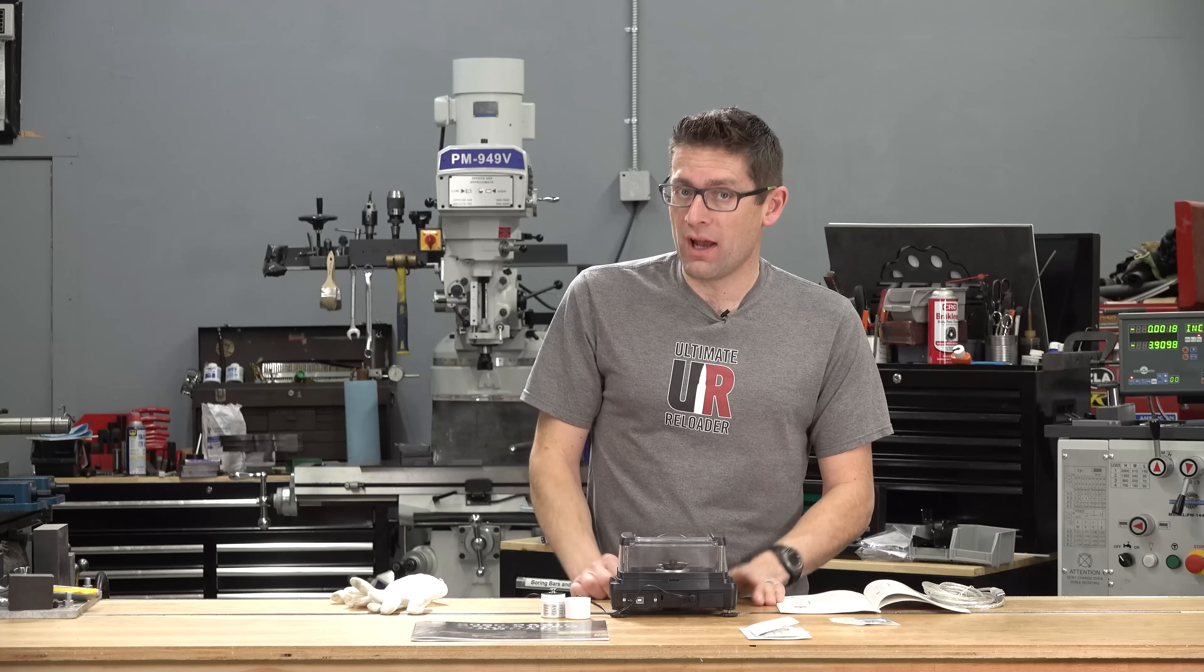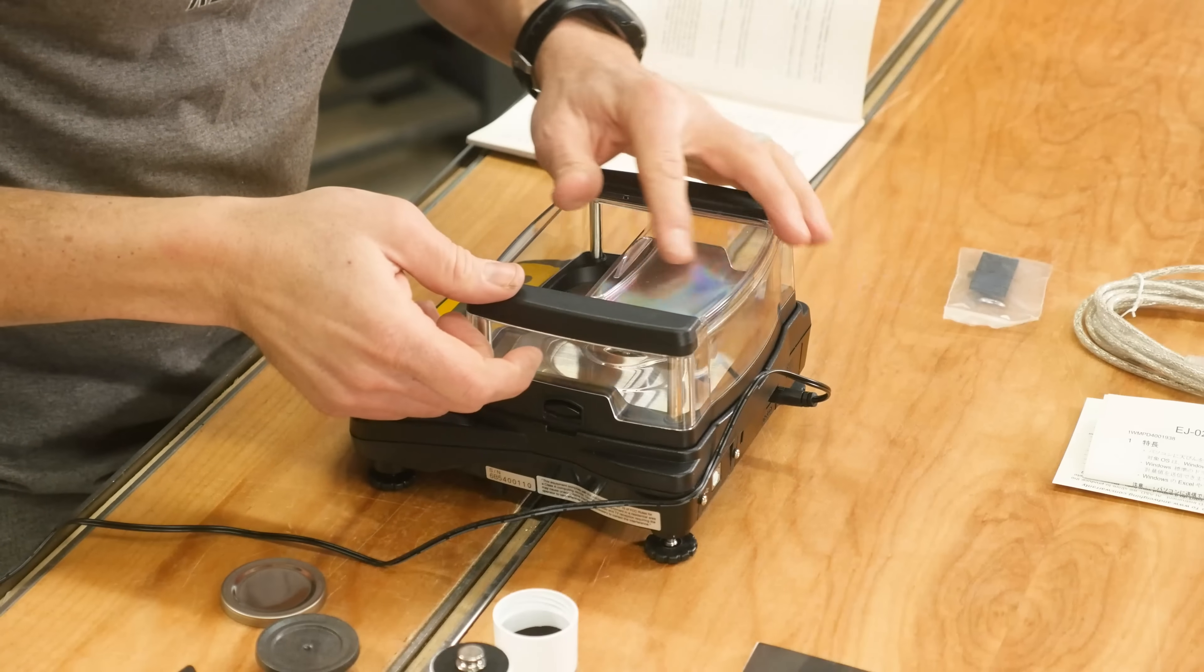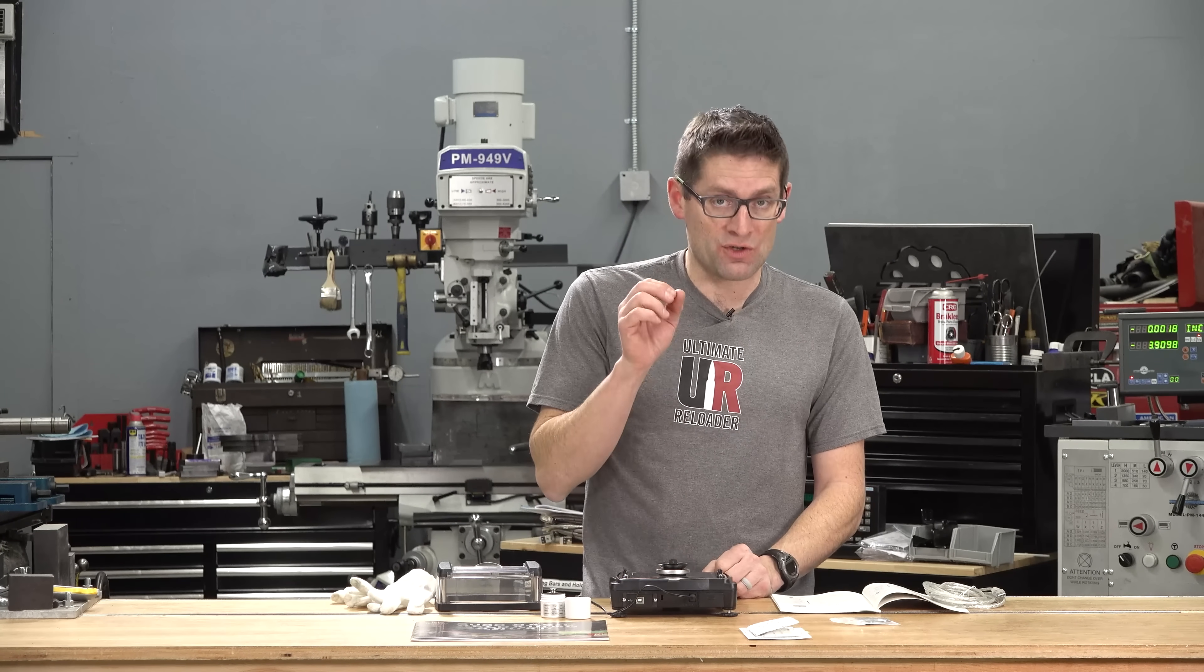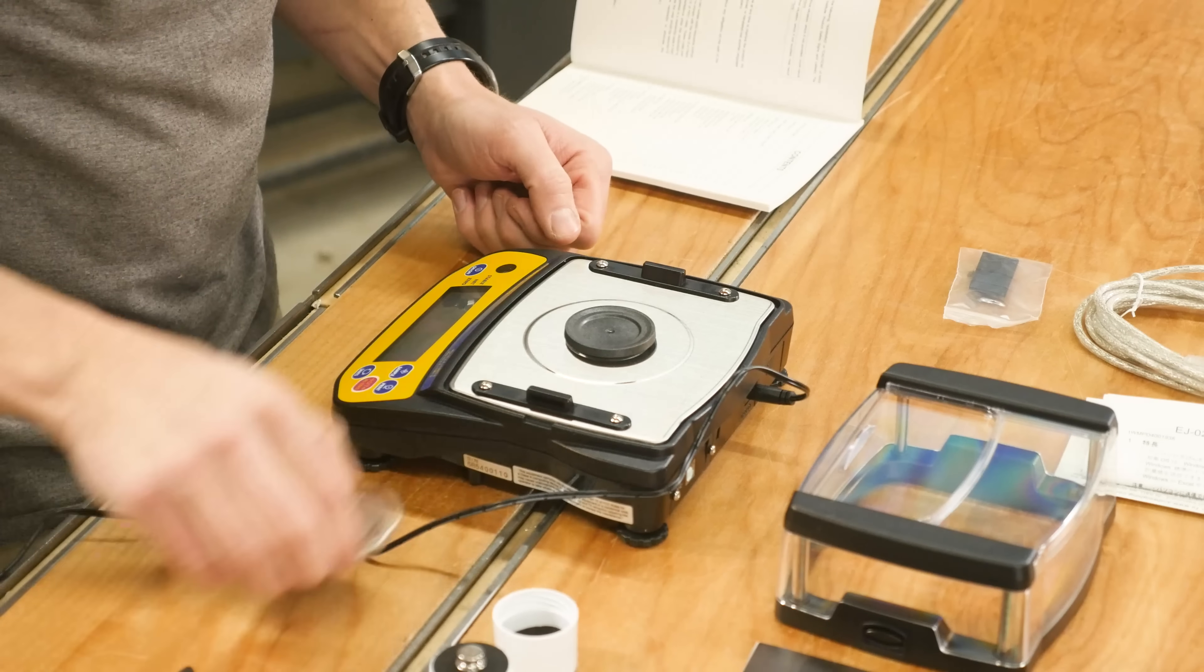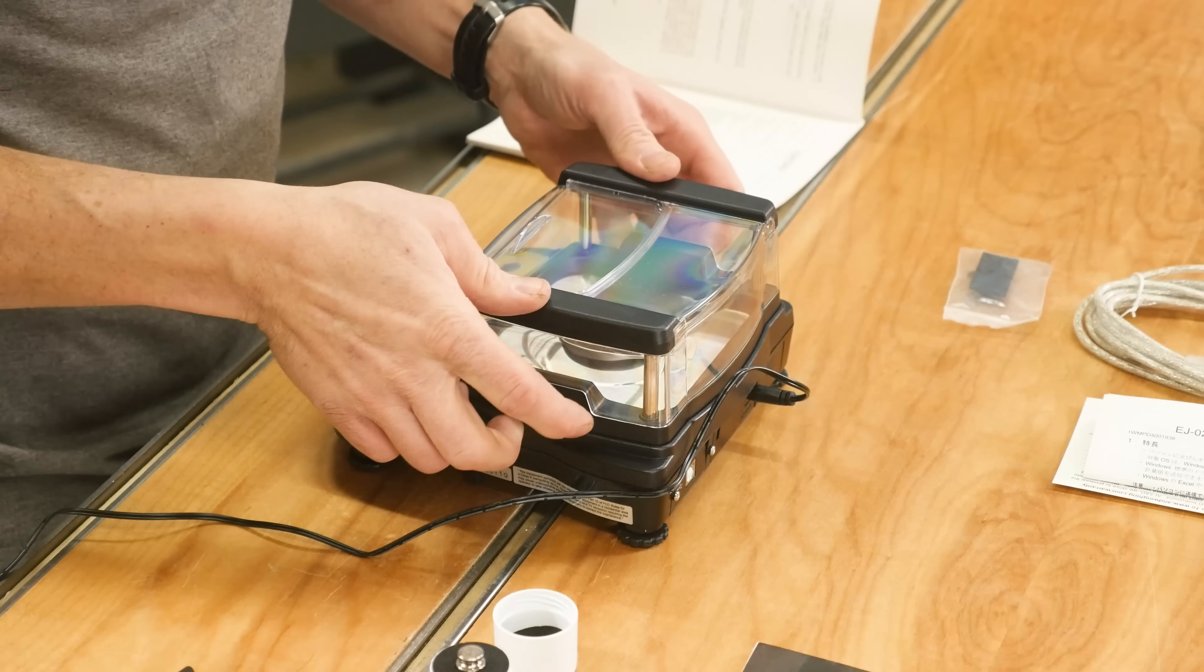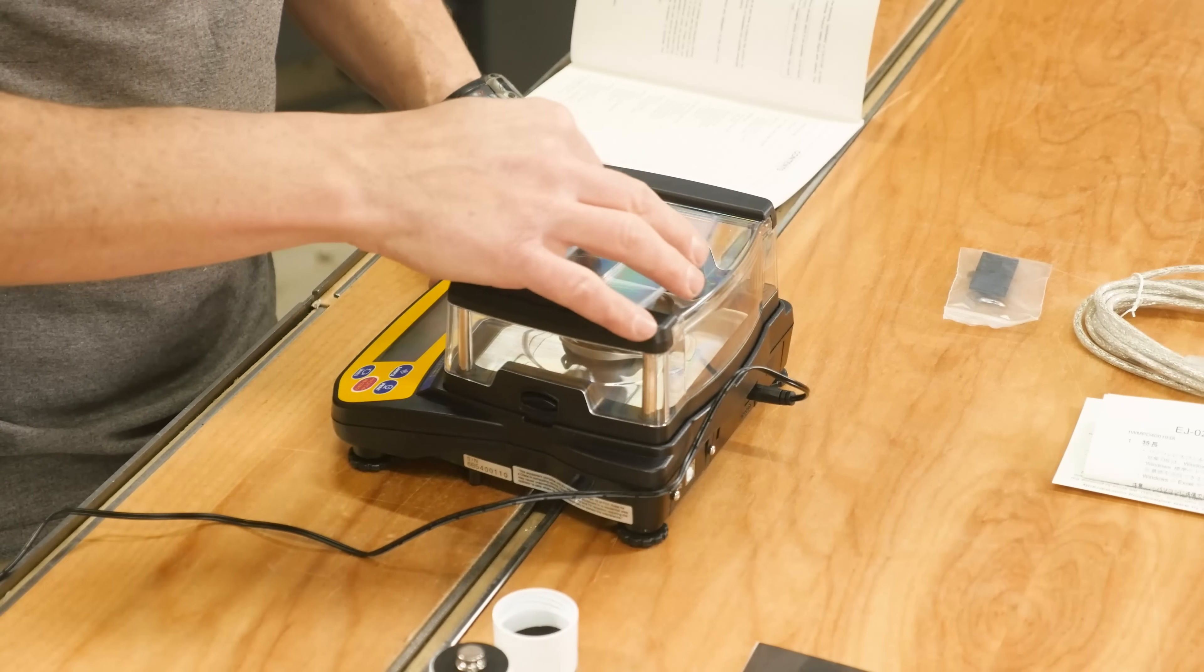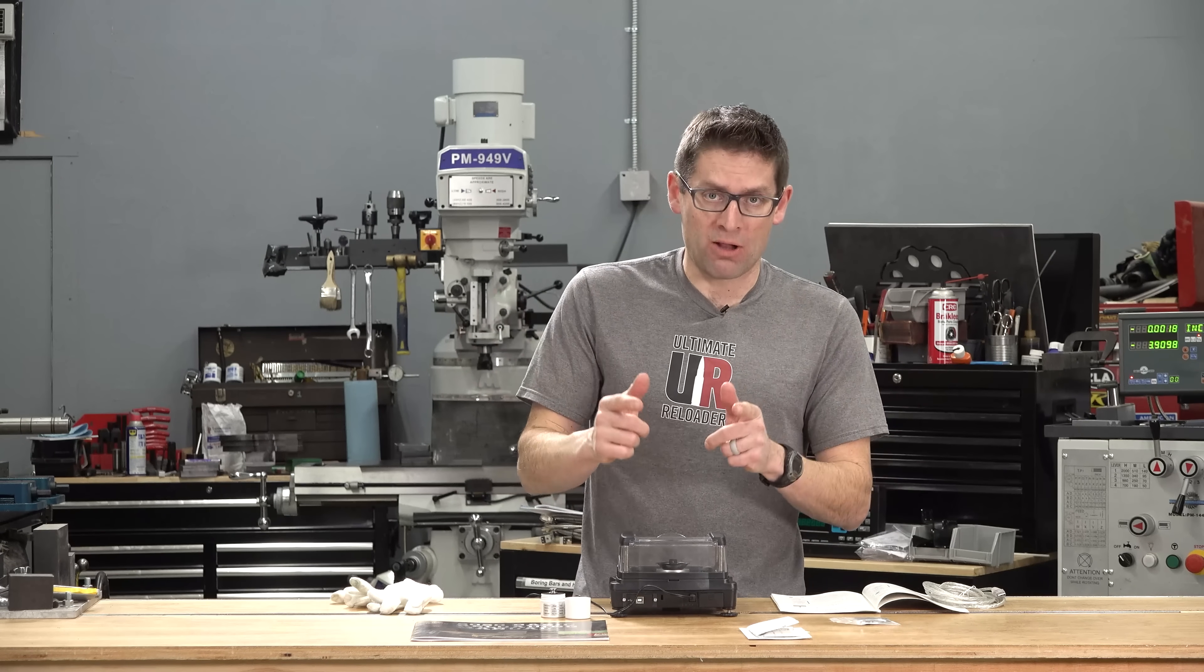In terms of setup, there's really not much to do. This particular scale has a sliding door on the top of the windscreen. If you lift up on these little levers on the side, you can completely remove the windscreen, which is great. You're going to take the plastic platen, put it on the scale sensor, then take the platen cover, which is metal, put it over the top of that, put your windscreen back on, and then you can put the pan on the platen if you so desire. Plug it in to AC power, turn the unit on, and wait about a half an hour before you calibrate the unit.